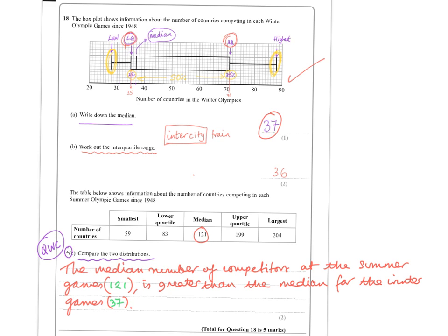So I'm going to write the sentence out. And I've written the median number of competitors at the summer games, 121, is greater than the median for the winter games, 37. Although it's really boring having to write such a long sentence out, including the numbers as well, you will definitely get the marks, okay? So sentences and numbers included, okay?